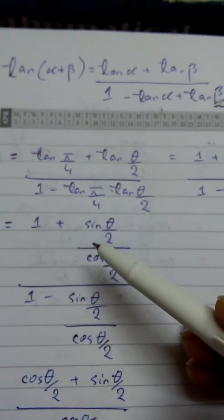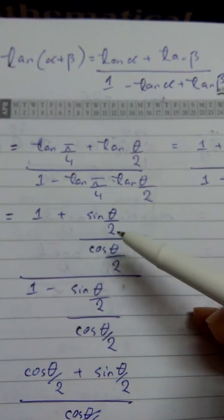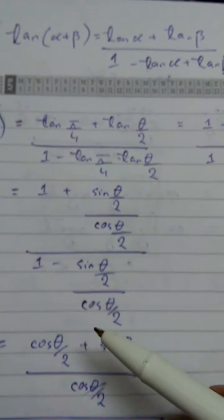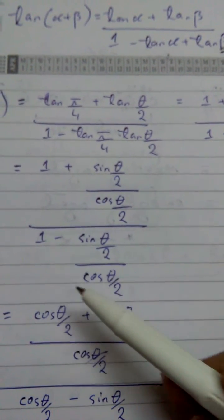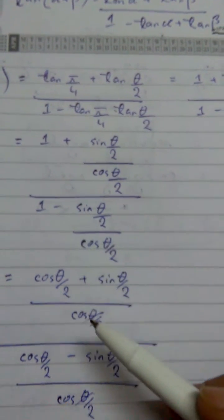After that, you simply focus on your numerator and just take out the LCM and you got this. Do the same thing in the denominator as well, take out the LCM and you got this.